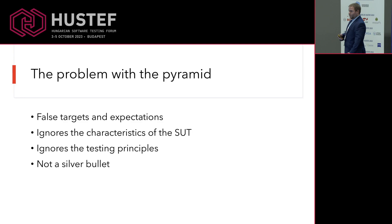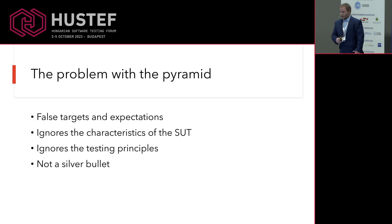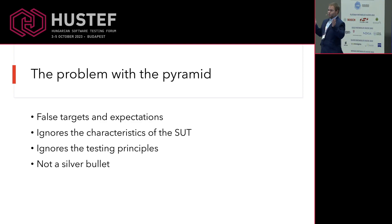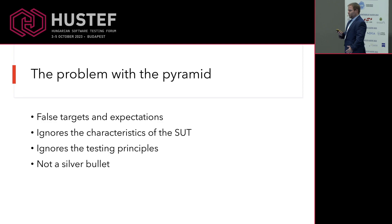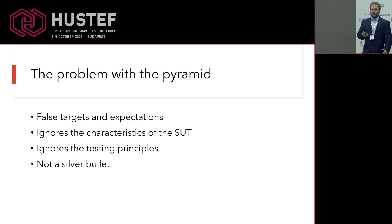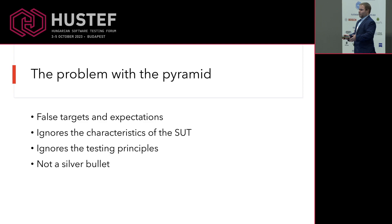First of all, it gives false expectations and targets. And also, due to this, it ignores the characteristics of the system under test. Imagine your application: you have a huge mobile application with a very severe UI, lots of animations, tons of interactions, and so on. You cannot use the traditional testing pyramid in that case, because you need to make sure that your UI is tested, since this will be the surface that the user will follow and use in their daily interactions.